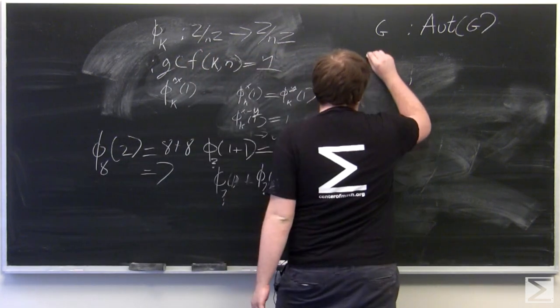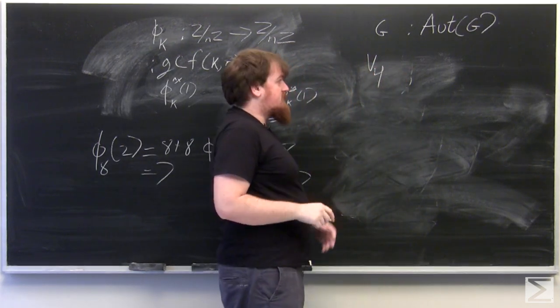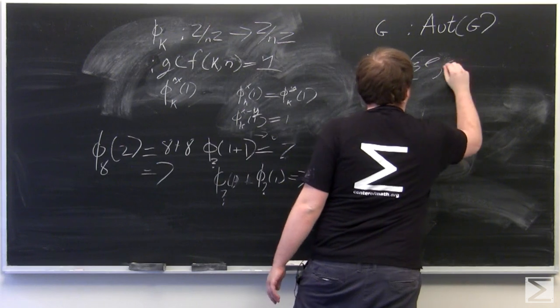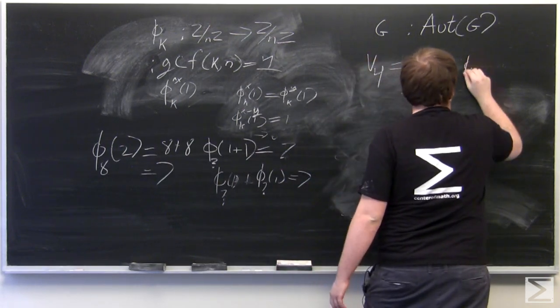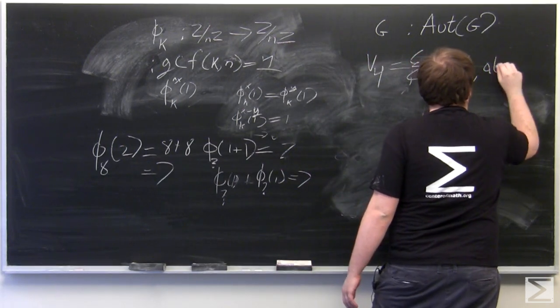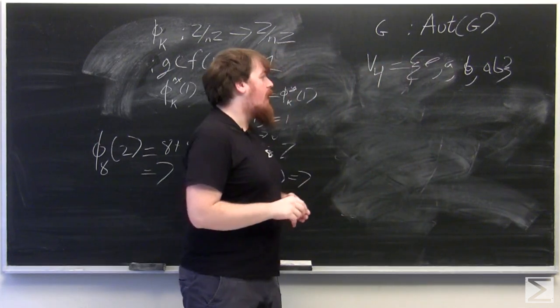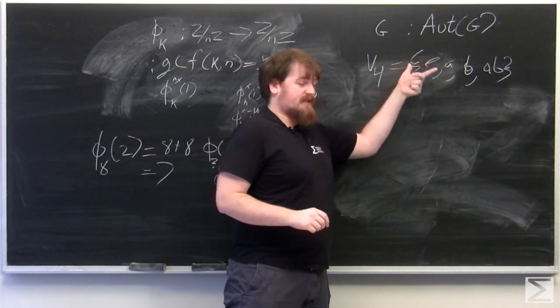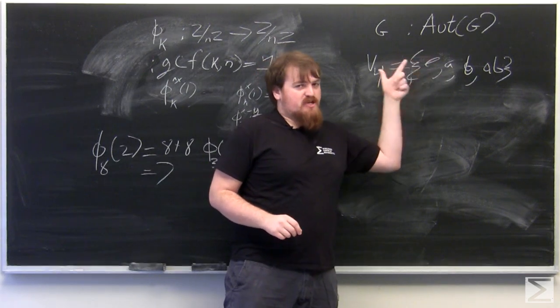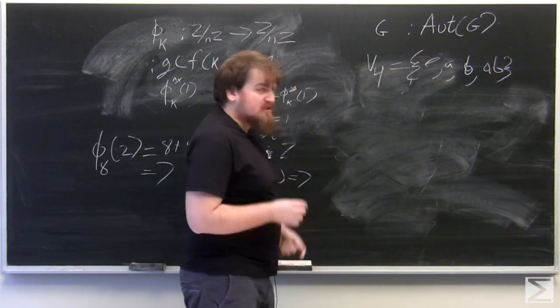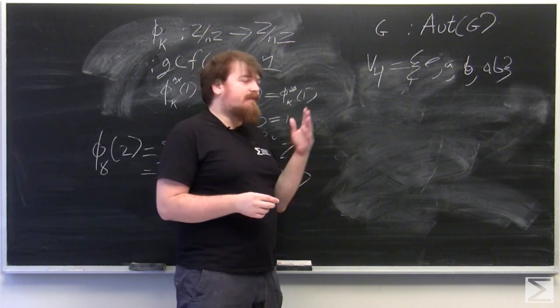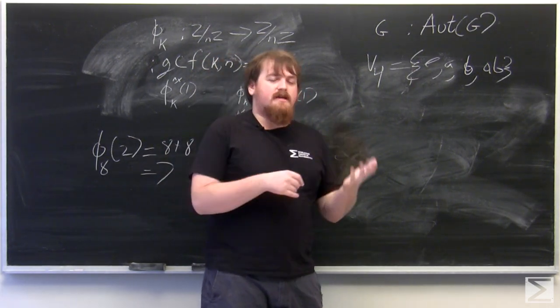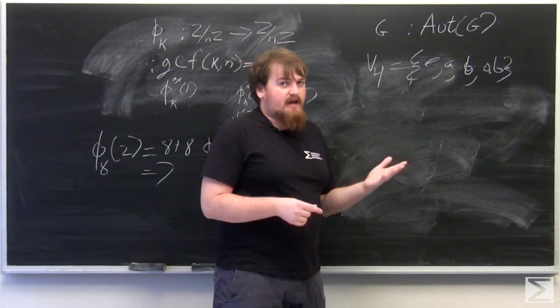If we look at V4 again, which I mentioned in the last video, this is going to be the four element group where A squared equals B squared equals AB squared equals the identity, and A and B commute with each other. So this is generated by, first of all, A and B, but also any two of its non-identity elements.